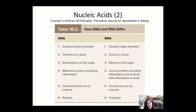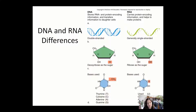DNA persists and is very stable as a double helix, while RNA is unstable and transient. The carbon number 2 in DNA's sugar has an H, while in ribose it has an OH — hence deoxyribose, where the prefix 'deoxy' means to remove something, in this case oxygen. The full name for the adenine nucleotide in DNA is dATP — deoxyadenosine triphosphate — while for RNA it is ATP — adenosine triphosphate.